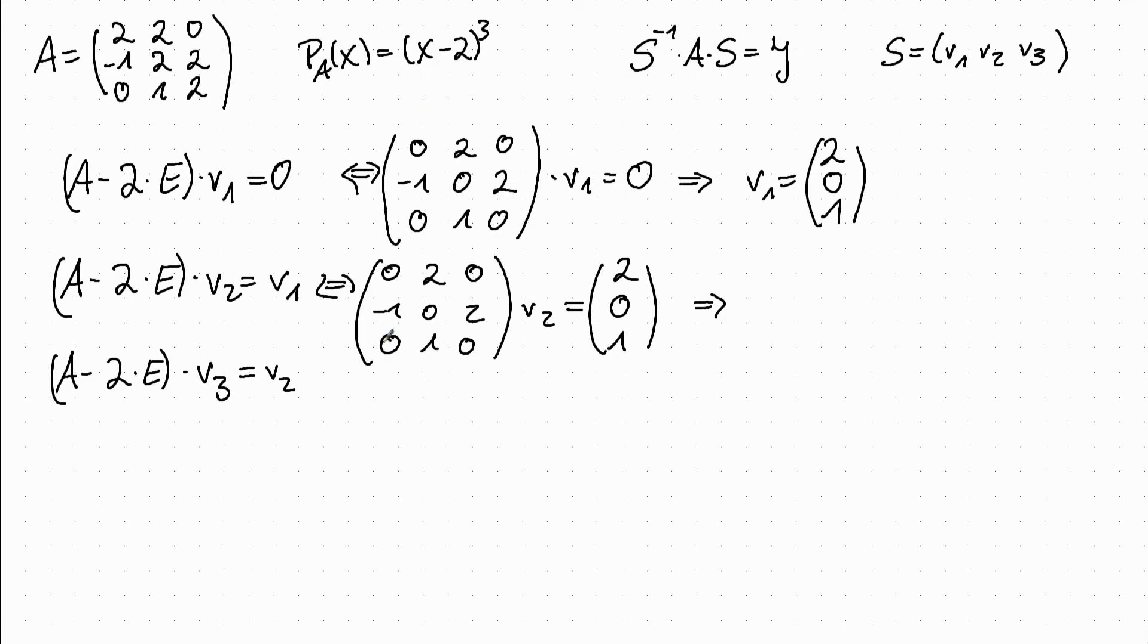And the third row and the first row, they tell us that the second entry of V2 has to be 1. And the second row tells us that minus 1 times the first entry plus twice the third entry has to be 0. So we can easily choose 0 and 0, and this fulfills this condition.